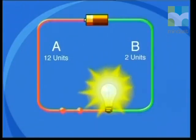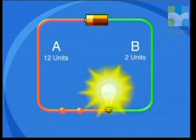When the battery is connected, a difference in potential energy arises across the light bulb in the circuit. Suppose each of the charge carriers in region A has 12 units of potential energy and in region B the charge carriers have 2 units of potential energy. There is a difference in potential energy across these terminals — we say there is a potential energy difference of 10 units because A has higher potential energy than B.